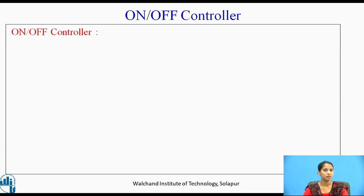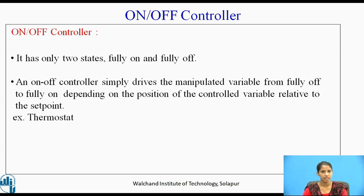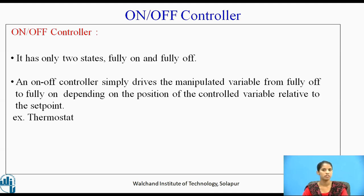The first type of controller is the on-off controller. It has only two states: fully on and fully off. An on-off controller simply drives the manipulated variable from fully off to fully closed depending on the position of the control variable relative to the setpoint. The example of the on-off controller is the home appliance thermostat, where the heating element is turned on when the temperature is below the desired level and turned off when the temperature reaches its maximum level.